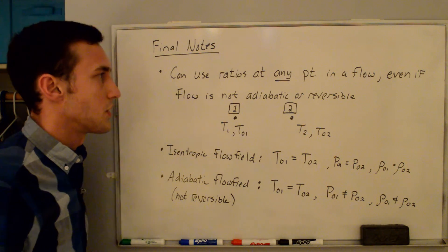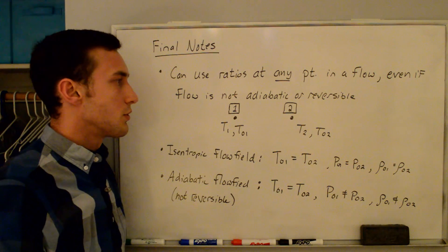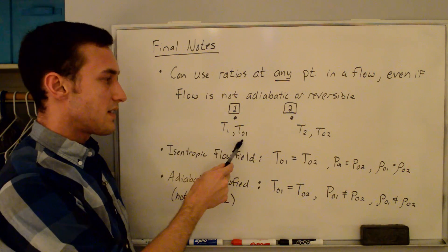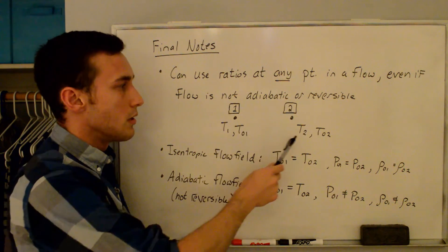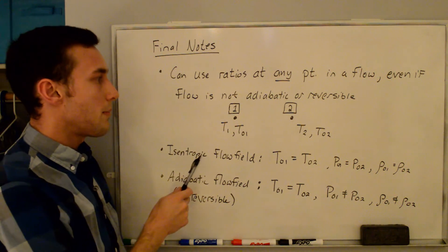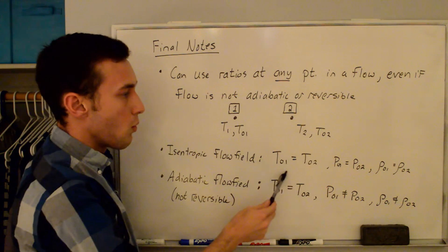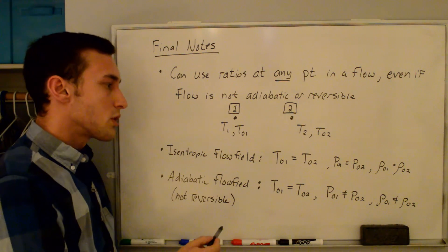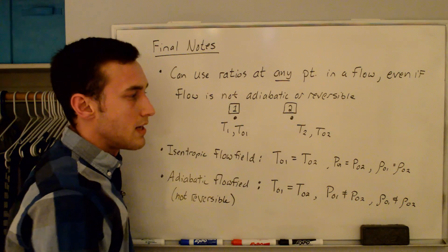A couple of final notes: you can use these stagnation to static ratios at any point in a flow, even if the flow is not adiabatic or reversible. At state one you can define a stagnation temperature, and at state two — even if the process from one to two is not adiabatic or reversible — you can define a stagnation temperature two. If the flow is isentropic, the stagnation temperature, pressure, and density will all be the same between states. If the flow is adiabatic but not reversible, stagnation temperatures and stagnation enthalpy will be the same, but stagnation pressures and densities will differ.